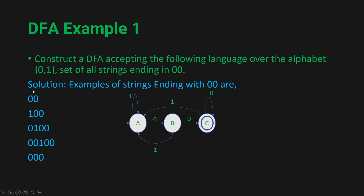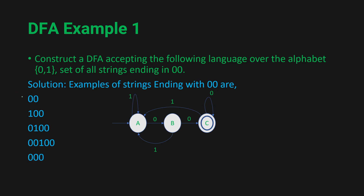Let's test our example strings. For the string '00': in state A we get 0, so we go to state B; then we get another 0, so we go to state C. Is state C a final state? Yes — so the string '00' is accepted.